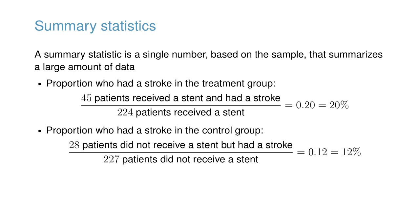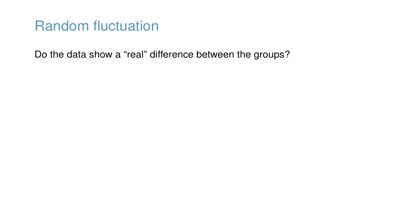These two summary statistics are useful in looking for differences in the groups, and we are in for a surprise. Comparing 20% to 12%, we see that an additional 8% of the patients in the treatment group had a stroke. This is important for two reasons. First, it is contrary to what doctors expected, which was that stents would reduce the rate of strokes. Second, it leads to a statistical question: do the data show a real difference between the groups?